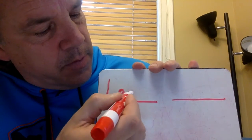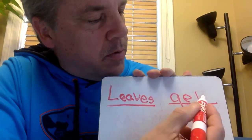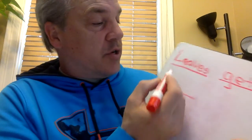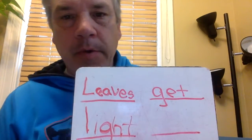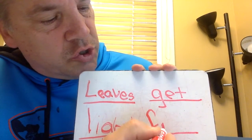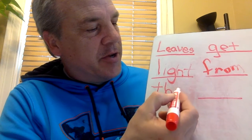So let's write that: 'Leaves get light from the Sun.' Leaves — we'll write it again with a capital. Leaves get light — I'll just give you 'light' because it's a really odd-looking word. It starts with L-I, then G-H-T, which you probably won't learn about until second grade. Leaves get light from the Sun — and 'the' is T-H-E, and then Sun.